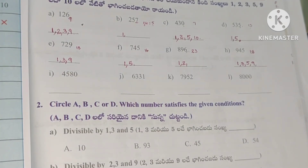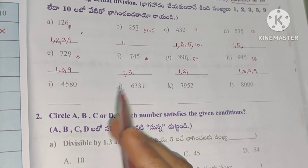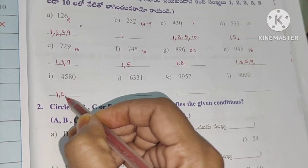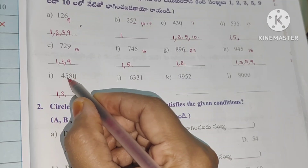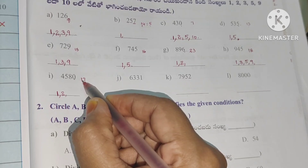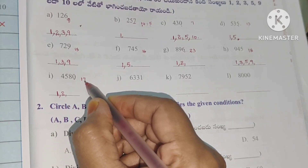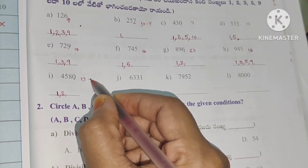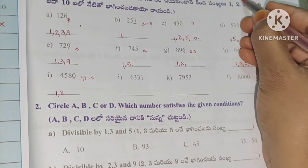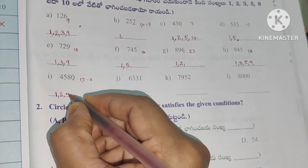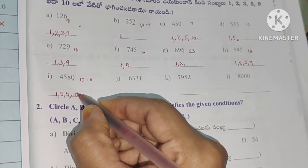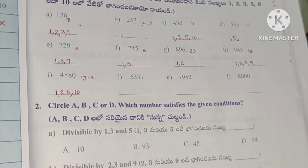Next number: units place is 0. Divisible by 1. Also divisible by 2. Not divisible by 9 — digital root does not work out to a multiple of 9. Units place 0 so divisible by 5 and 10. It is divisible by 1, 2, 5, and 10.